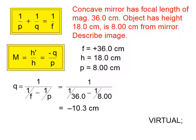That negative sign in q tells us that we have a virtual image. Of course, all virtual images are upright, so we can describe the image as being virtual and upright so far.